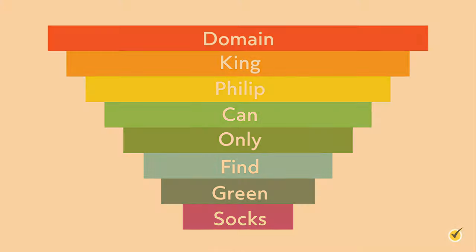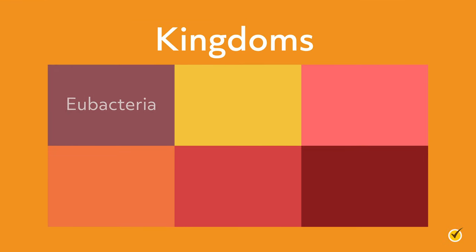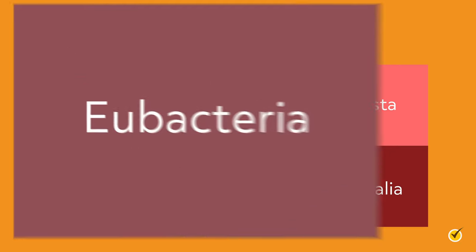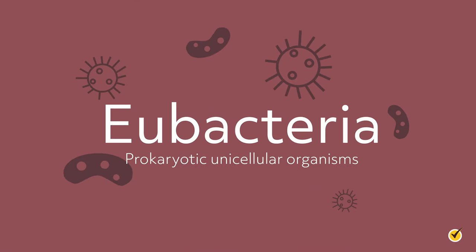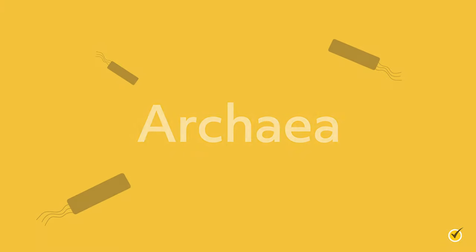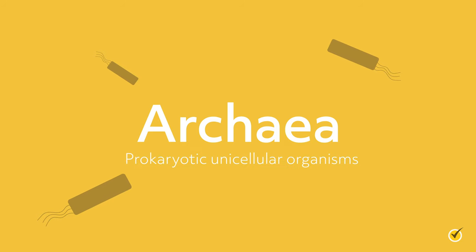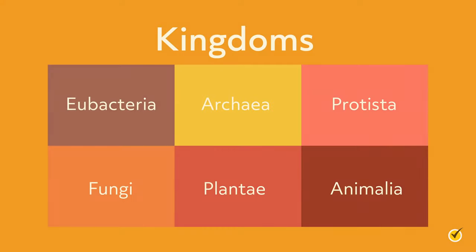After the three domains, there are six kingdoms: eubacteria, archaea, protesta, fungi, plantae, and animalia. The eubacteria kingdom consists of prokaryotic unicellular organisms, which includes most bacteria. Organisms in the archaea kingdom are also prokaryotes, and many are found in extreme environments like hydrothermal vents or hot springs. An older classification model combines eubacteria and archaea into one kingdom called monera.